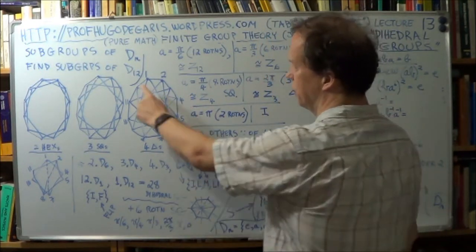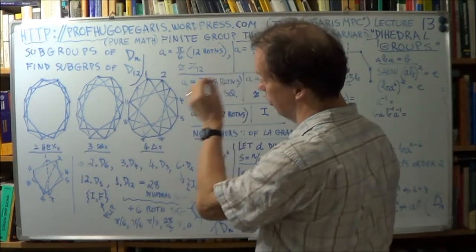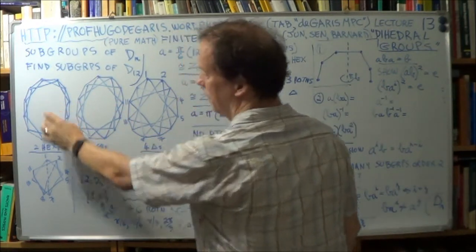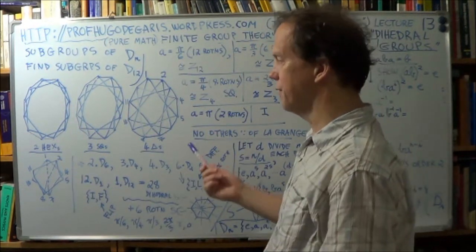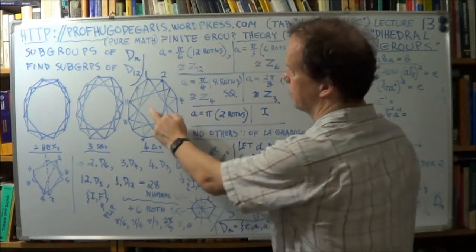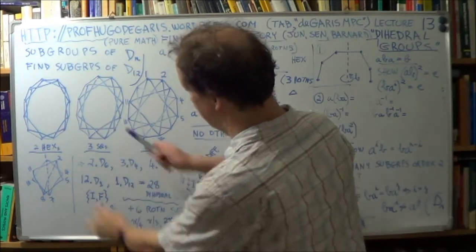And each triangle, or here, each square, or each hexagon, they correspond to a different subgroup. And why is that? Well, let's take the case of, well, the square here.